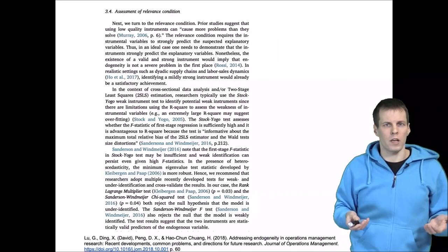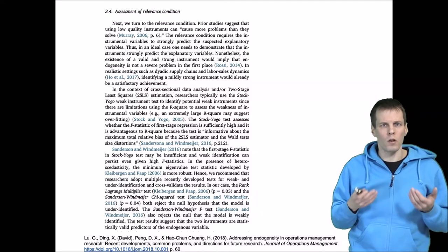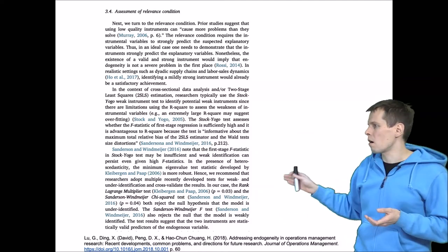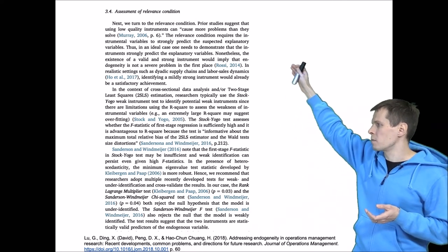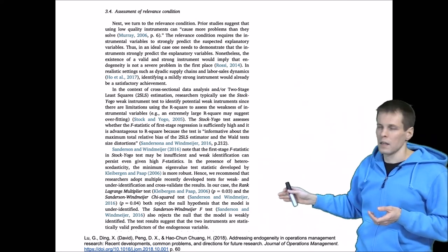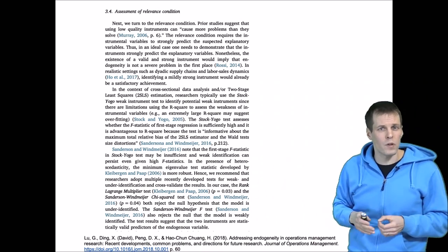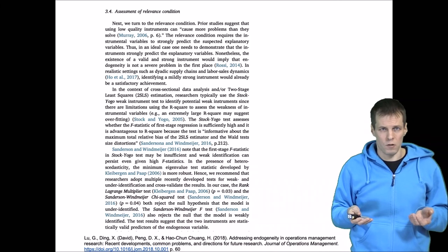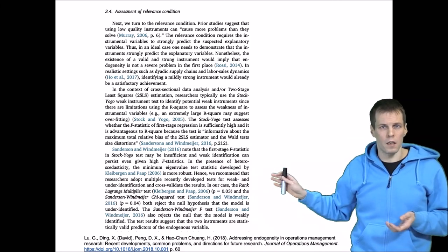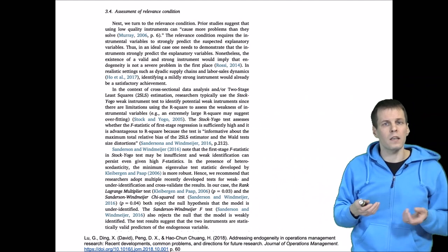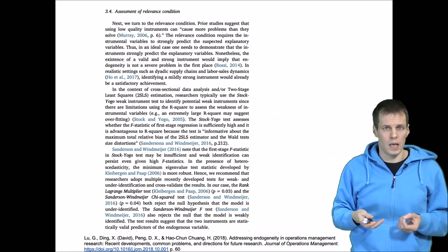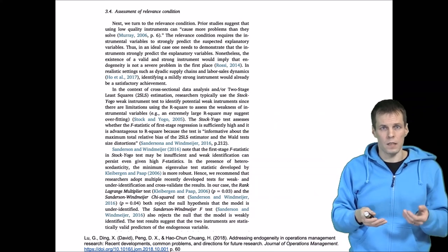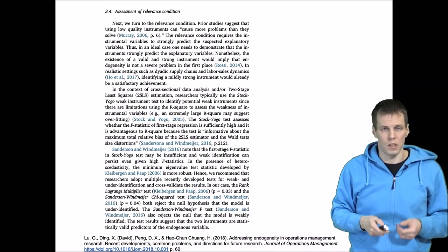There are quite a few other tests available. This Stock and Yogo heuristic is the most commonly used. This article from the Journal of Operations Management lists some of the other tests, and if you have some issues with the Stock and Yogo test, for example if you have lots of heteroscedasticity in your data, then you should be looking at these other tests. But the idea in these tests is basically the same: you look at whether the instruments as a set are sufficiently strongly correlated with the endogenous explanatory variable.